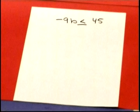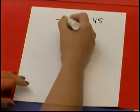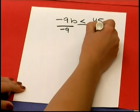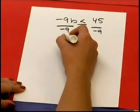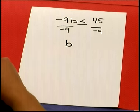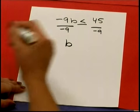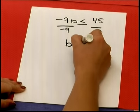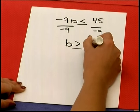We're going to do a few problems so you can see this. To solve: negative 9b is less than or equal to 45. We begin by isolating the variable — to do this, we divide both sides by negative 9. Now that I've divided both sides by negative 9, I rewrite the problem. B — remember we divided by a negative number — so we need to reverse the sign. So B is greater than or equal to negative 5.